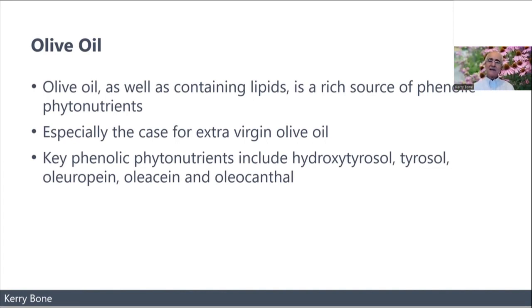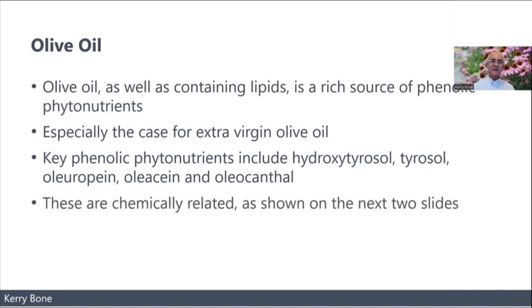Oleuropein is probably well known to herbal therapists because it also occurs in olive leaf extract. In the virgin pressed oil you have related compounds called oleacin and particularly oleocanthal, and they're of quite good interest as well, as I'll show on the next two slides — they are chemically related.